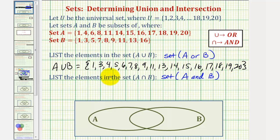And now to find the elements in the set A intersect B, we want the elements that are in A and B. So now we're looking for the elements that are in both A and B.